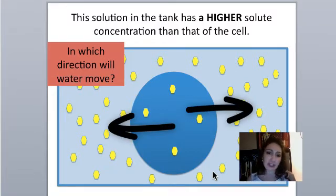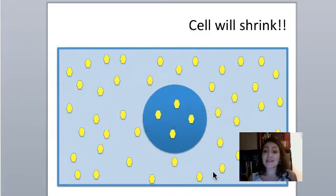Now imagine the implications of water moving outside of the cell. What do you think this is going to do to the cell itself? If water is being removed from the cell, how do you think this is going to affect the cell's size? Well, the cell will shrink.